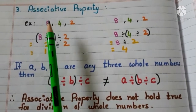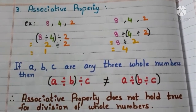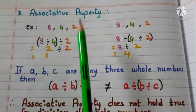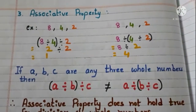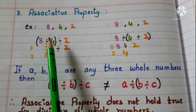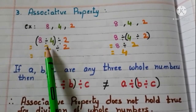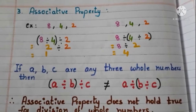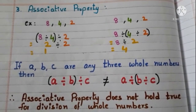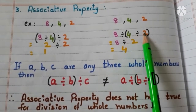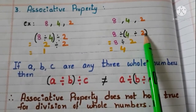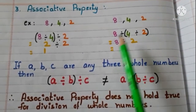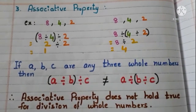Now associative property. Take 3 whole numbers 8, 4, and 2. First divide 8 with 4 and then divide with 2: 8 divided by 4 is 2, and 2 divided by 2 is equal to 1. Now change the grouping — first divide 4 with 2: 4 divided by 2 is 2. Now divide 8 with 2: 8 divided by 2 is equal to 4.